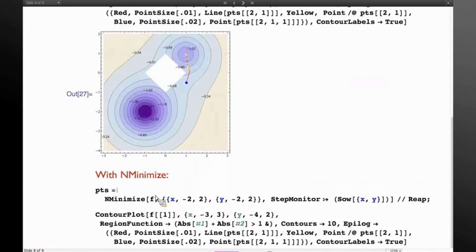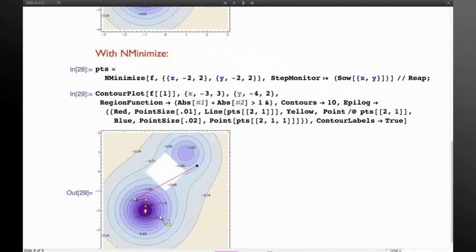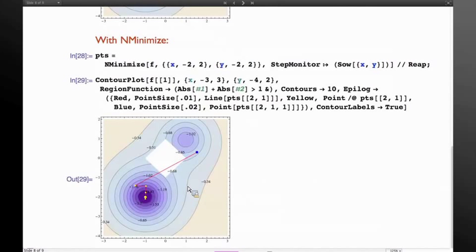Now the same problem with NMinimize, we would hope would go to the global minimizer, which is down here. And in fact, it does. It jumps right over the constraints and lands in the global minimum. And similarly, we could have added all the other methods that I looked at did the same thing for this problem. So it's rather robust.